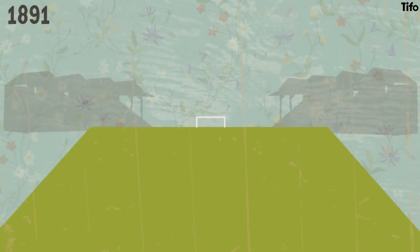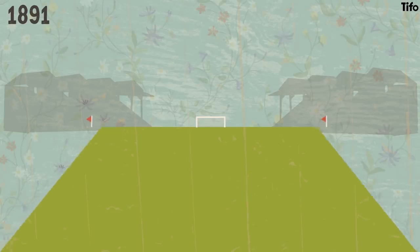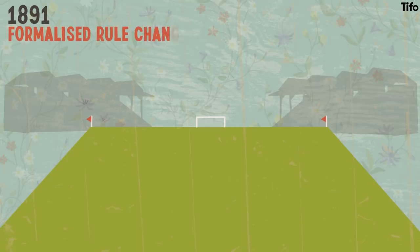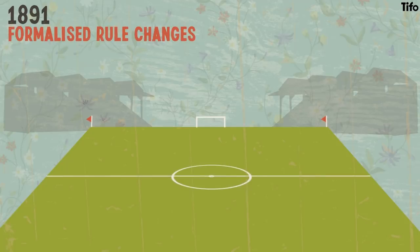For a long time, they didn't. In 1891, football pitches were marked out by little more than goalposts and corner flags, and even the actual dimensions of the pitch were vague. That changed later that year in response to formalised rule changes. With them, the modern pitch began to take shape. A centre spot and circle were added, so too were goal and touch lines, and a penalty area and a 12-yard line were first introduced. But they didn't quite look like they do today.